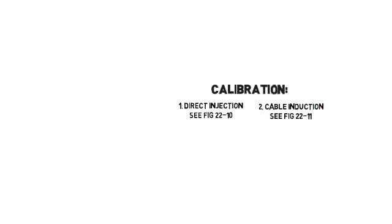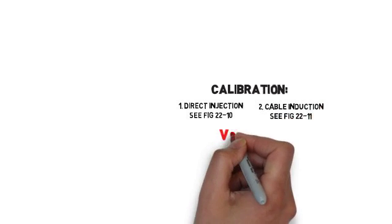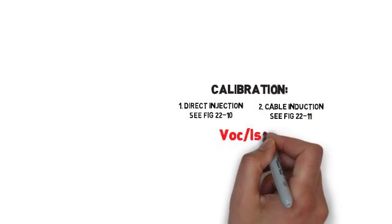This method uses a coupling transformer to inject the power needed. Using either method, we need to achieve both the open circuit voltage and the short circuit current.